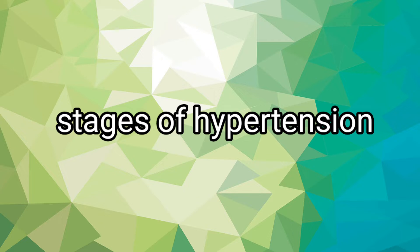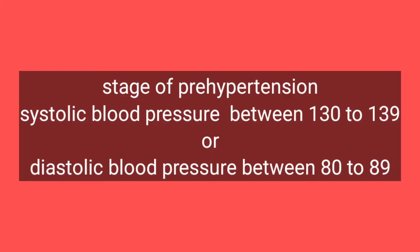Today's topic is discussing about high blood pressure. What are the stages of hypertension? In the first stage, or pre-hypertensive stage, the blood pressure is around 130 to 139 systolic and the diastolic blood pressure is between 80 to 89 mm of mercury. This is the stage of pre-hypertension or stage 1, where the patient doesn't need any medications.